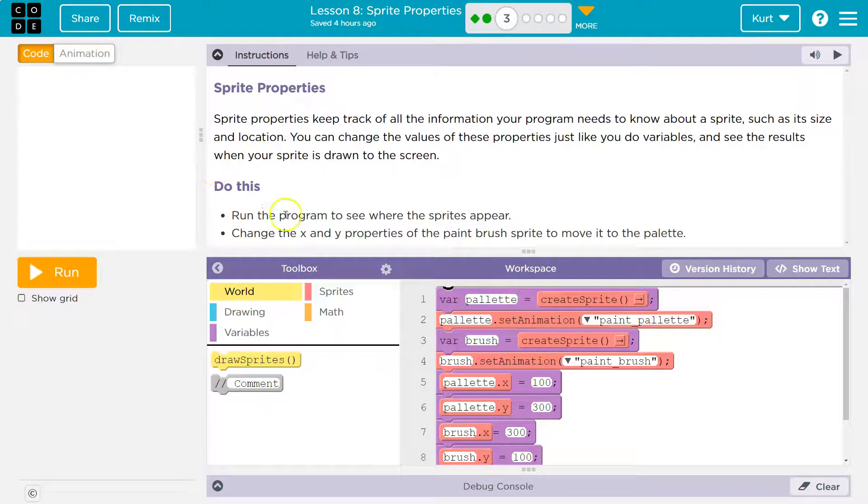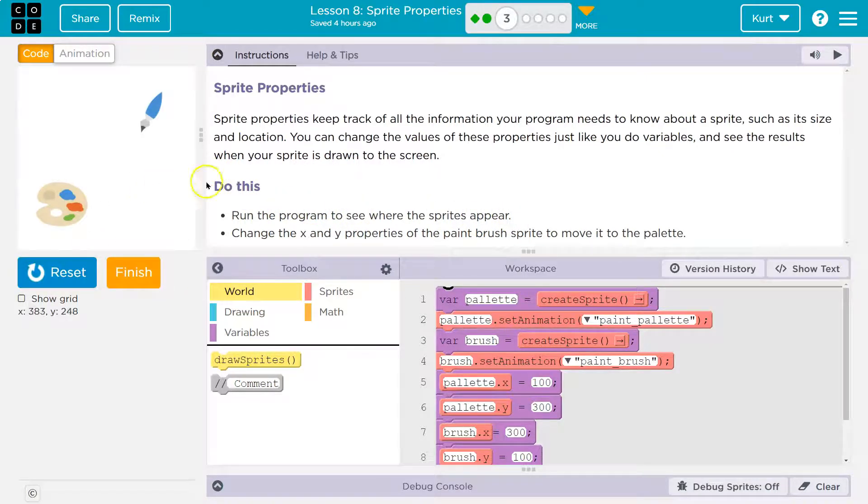It's somewhat like an object. All right, do this. Run the program to see where the sprite appears. Run. Sprites. So this paintbrush is a sprite and this palette is a sprite. Change the x and y properties of the paintbrush sprite to move it to the palette.